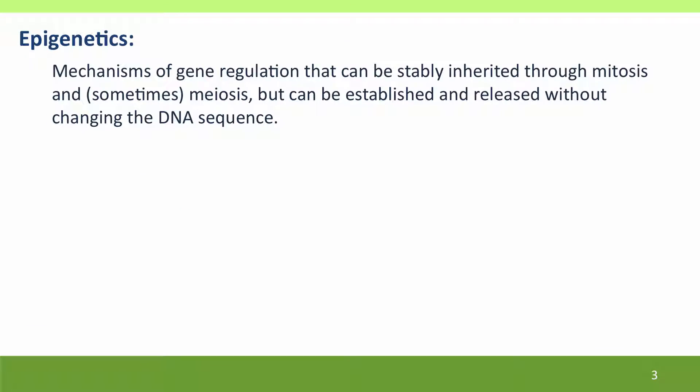Epigenetics refers to mechanisms of gene regulation that can be stably inherited through mitosis, and sometimes through meiosis as well, but they can be established and released without changing the DNA sequence. Normally when we think of changes that are stably inherited through cell generations, we think of mutations — changes in DNA sequence. That's not the case with epigenetics.